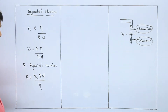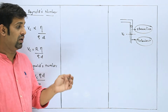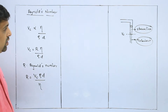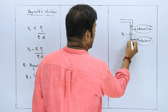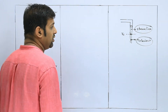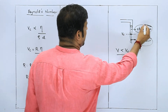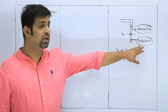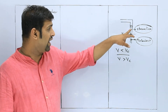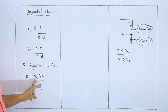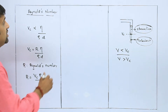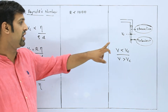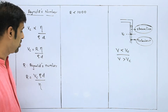Reynolds number is a constant. If you want to find the Reynolds number, R equals vc times rho times d divided by eta, where vc is the velocity of the fluid at that point. So if you substitute the velocity, and the answer R is somewhere around less than 1000, that means the flow is streamlined.